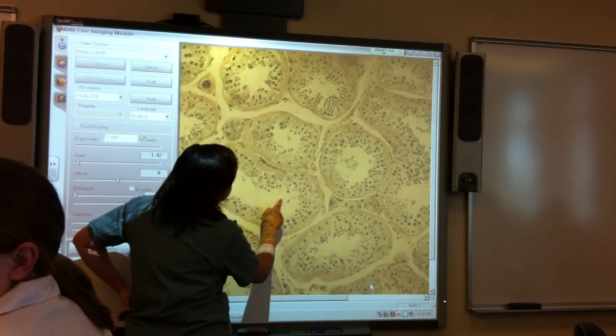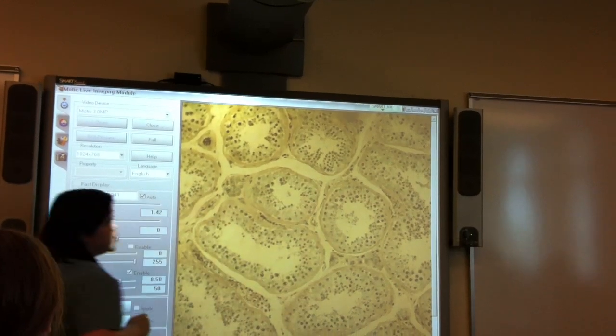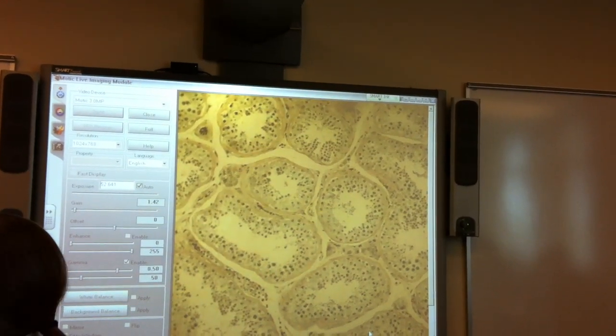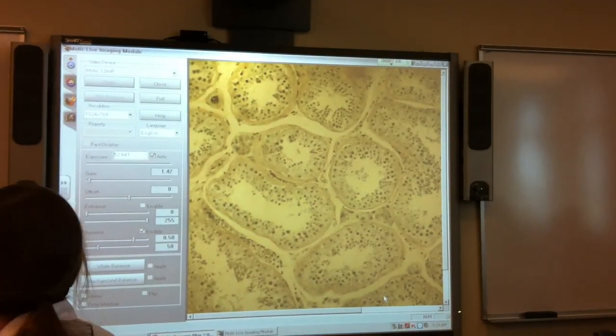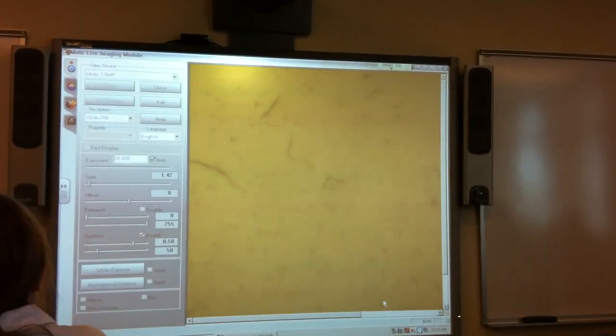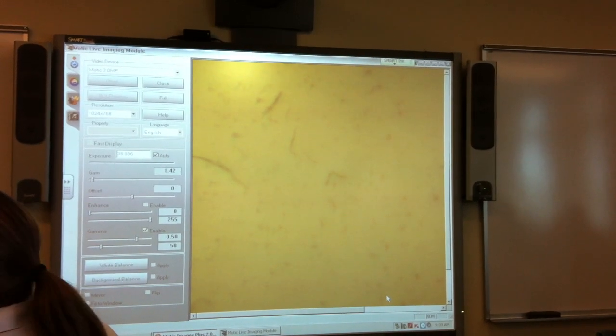And then there are cells here, and a lot of times you can actually see the tails. And if you see the tails, they're immature sperm. Questions on that? Some slides have better immature sperm in here. I just don't have one. Here we go.